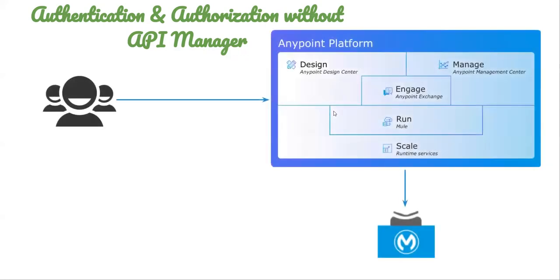Welcome back to Mule Academy. In today's session we are going to talk about a very important use case. Let's say your client bought a MuleSoft license — it can be anything, we have three variants available: Gold, Platinum, or Titanium. In whichever scenario, you won't get API Manager out of the box, so we need to pay extra.